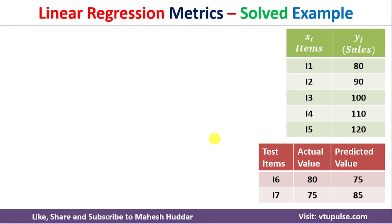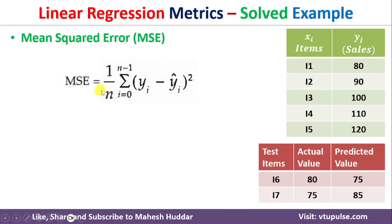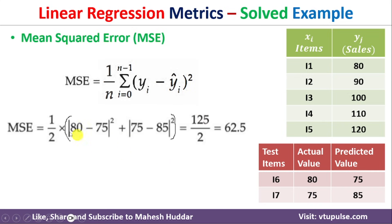The second metric for evaluating the performance of linear regression is Mean Squared Error. The MSE formula is: MSE = (1/n) × Σ (yi − ŷi)², where yi is the actual output, ŷi is the predicted output, and n is the number of testing examples. Here, absolute value is not required because we are squaring the difference, which always makes it positive.